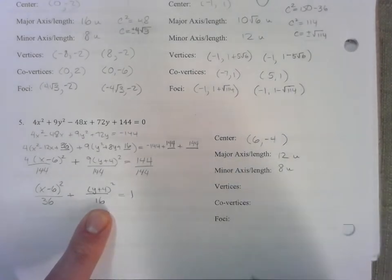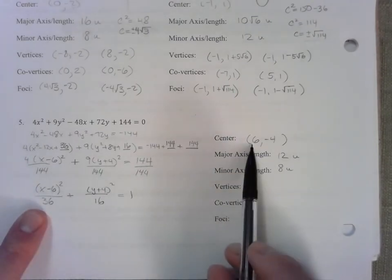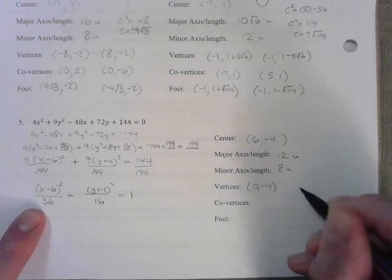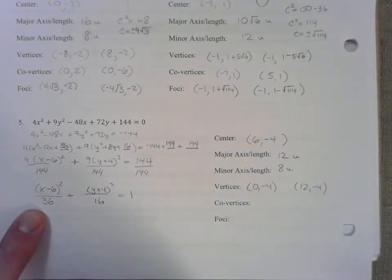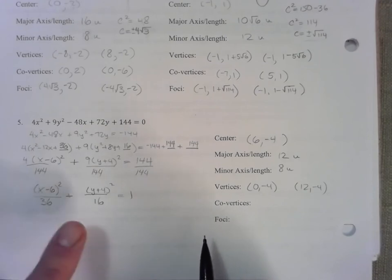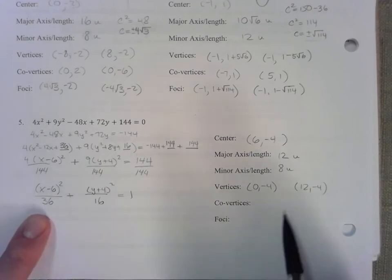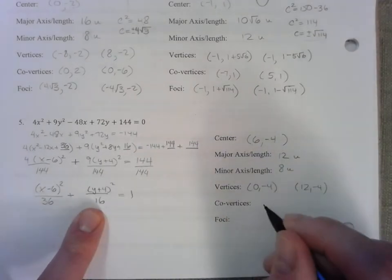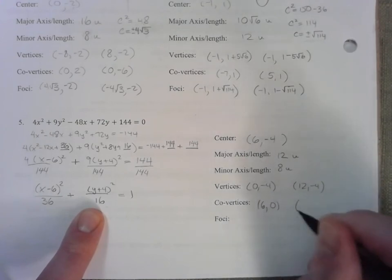Where are the vertices? There are 6 units left and right of the x-coordinate. Let's subtract 6, let's add 6 to the x-coordinate. These are locations of your vertices. Why did I go left and right? This was wider because the larger number is under the x. Your co-vertices: four units above and below the y-coordinate, so the x doesn't change, four units above, four units below.